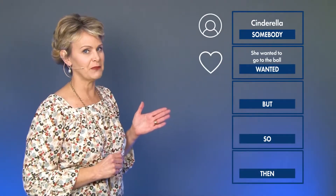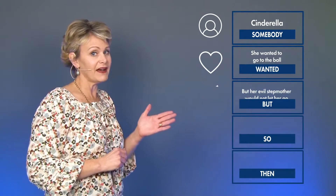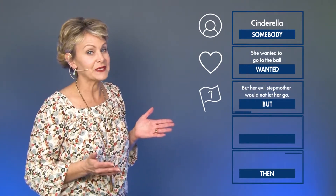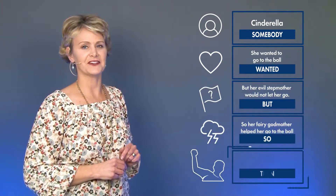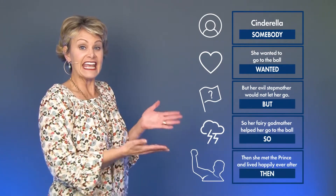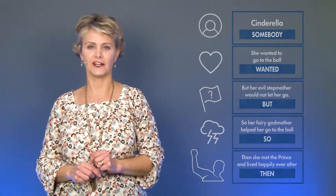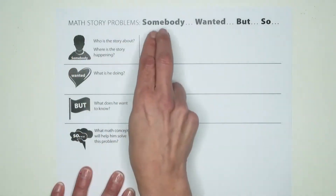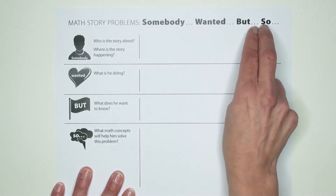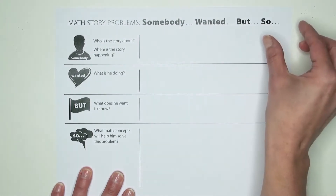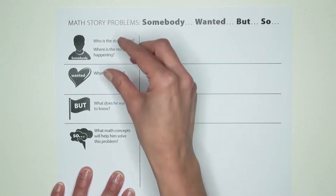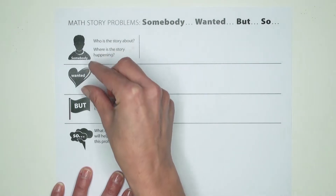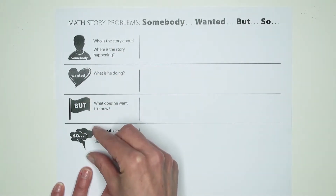Cinderella wanted to go to the ball, but her evil stepmother wouldn't let her, so her fairy godmother helped her, and then she met her prince charming. Bring in the same frame, but leave off the 'Then' for a little bit — just introduce 'Somebody Wanted But So.'